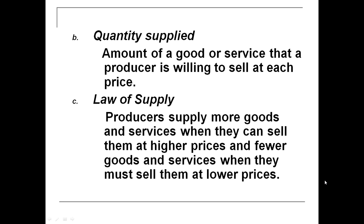The law of supply says this: producers supply more goods and services when they can sell them at a higher price, and fewer goods and services when they must sell them at lower prices. In other words, as price goes down, quantity supplied goes down; as price goes up, quantity supplied goes up. So there is a direct relationship between price and quantity supplied — they move in the exact same direction.